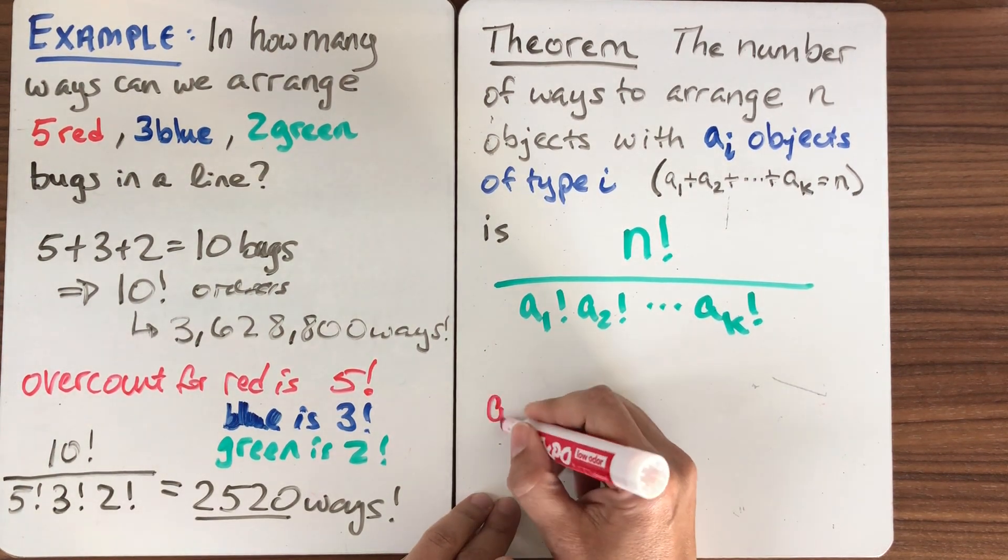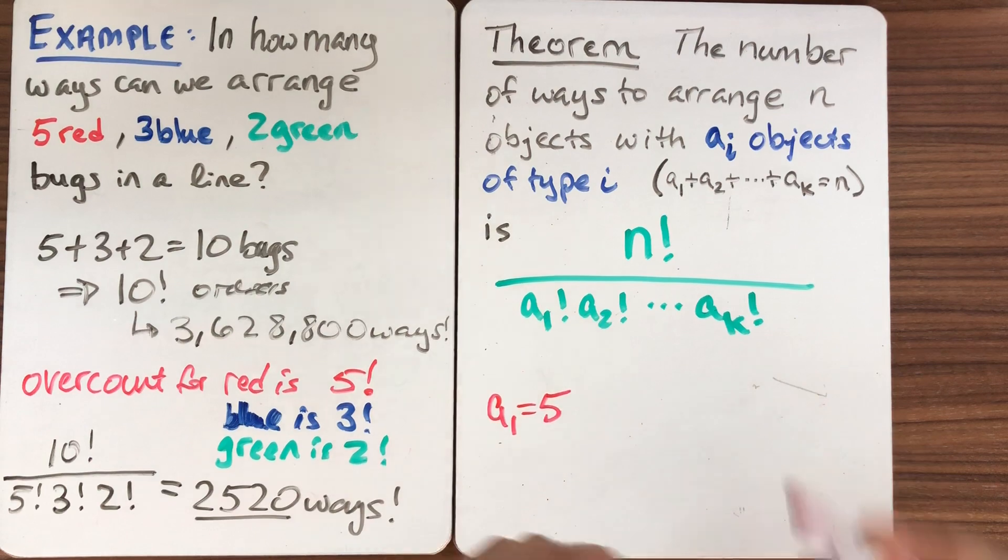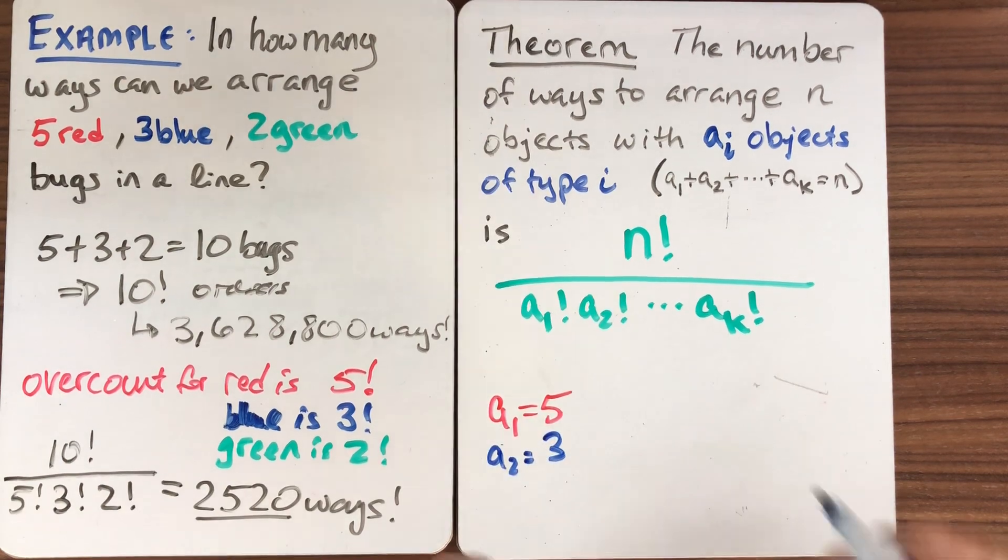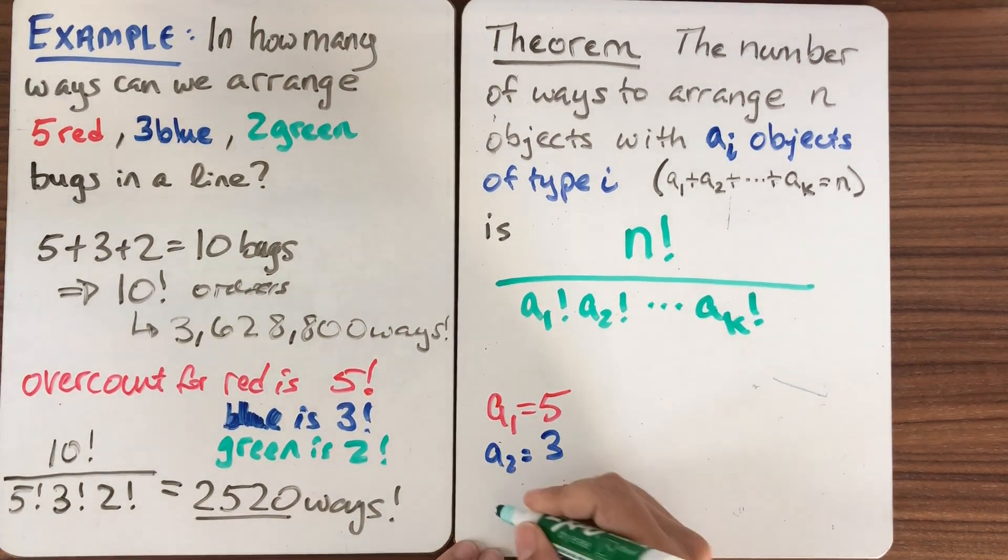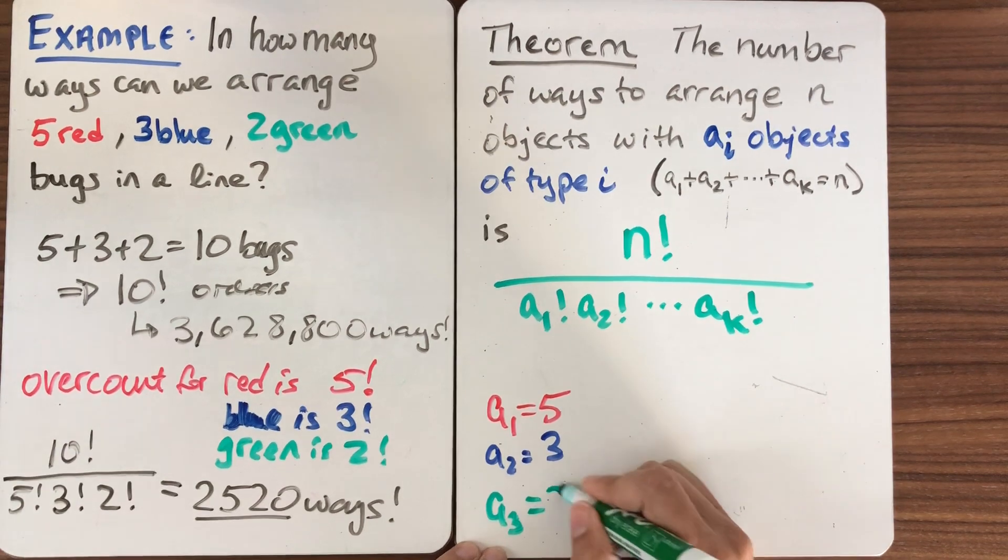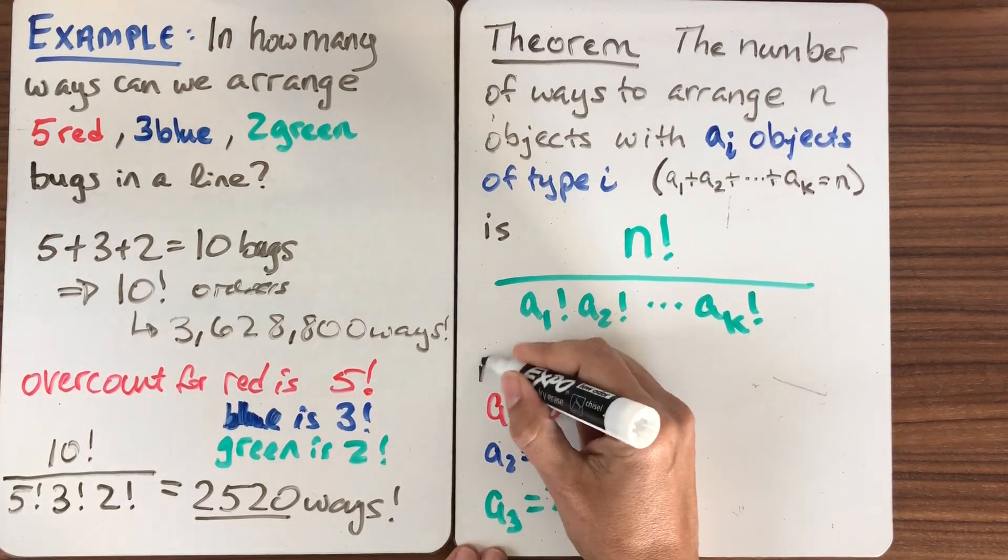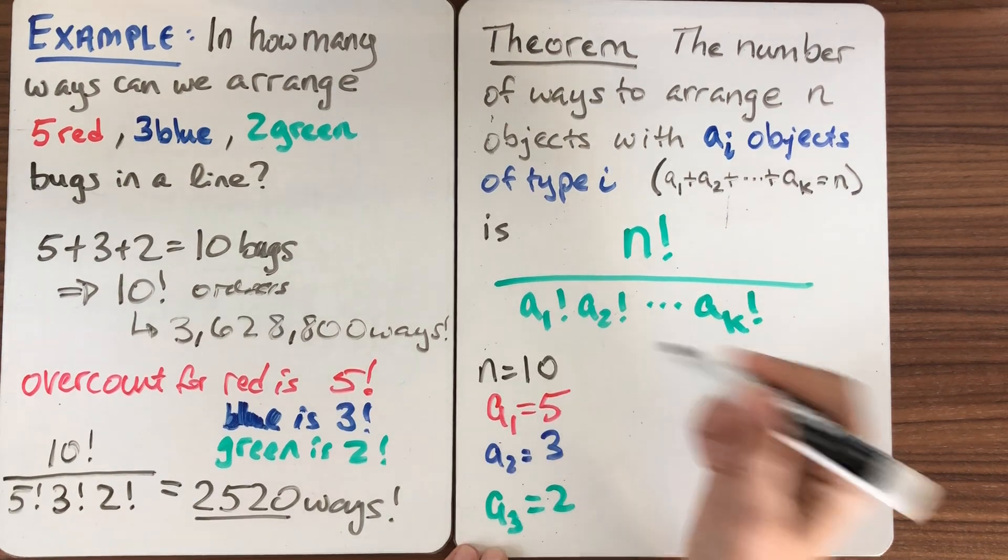So for the example, I had a1 was 5 for the red bugs. We did a2 equals 3 for the blue bugs. And a3 was 2 for the green bugs. And in this case, n was the total number of bugs, which was 10.